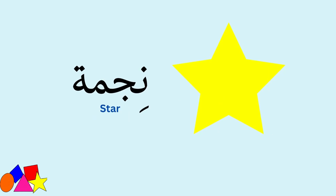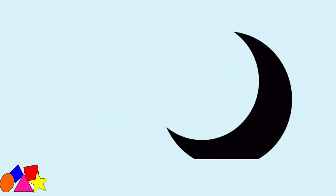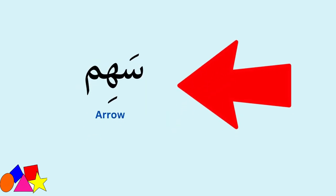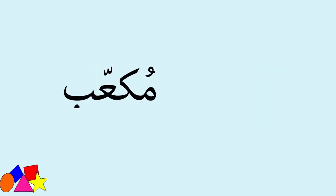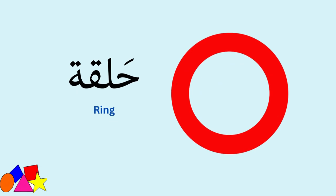نجمة — Star. قلب — Heart. هلال — Crescent. سهم — Arrow. مكاعب — Cube. حلقة — Ring.